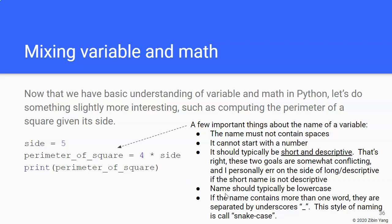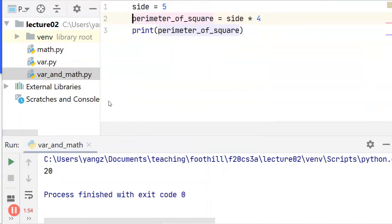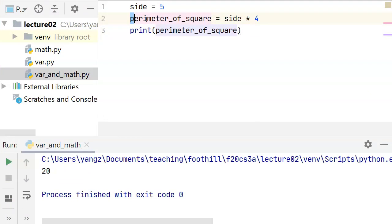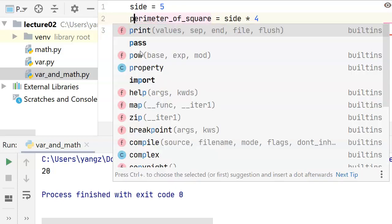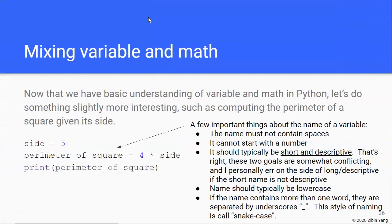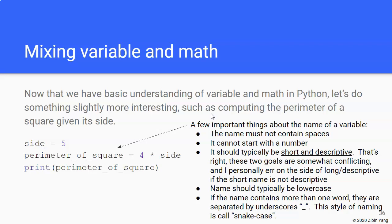Now one very important thing is the name of a variable should almost always be lowercase, so I don't want to see things like capital perimeter of capital square and things like that. So mostly lowercase unless there are very good reasons for using capital letters.